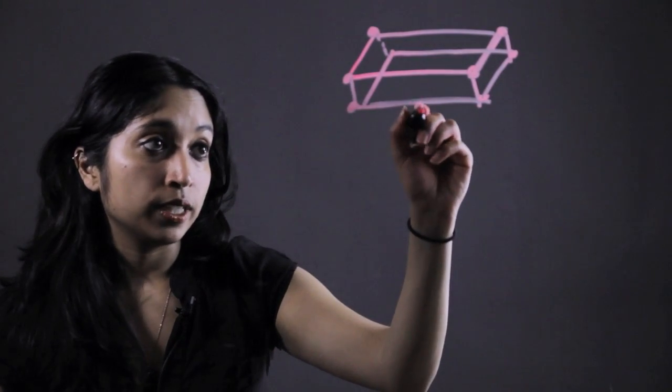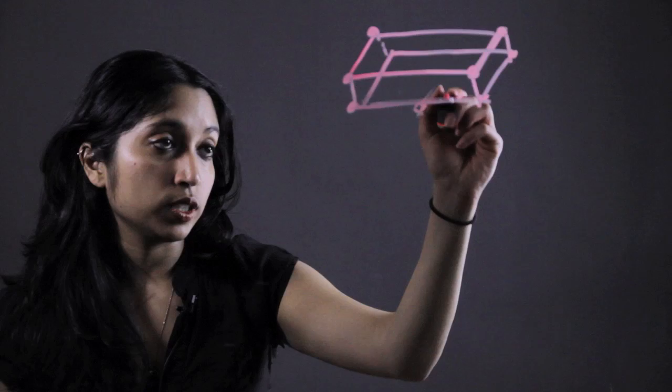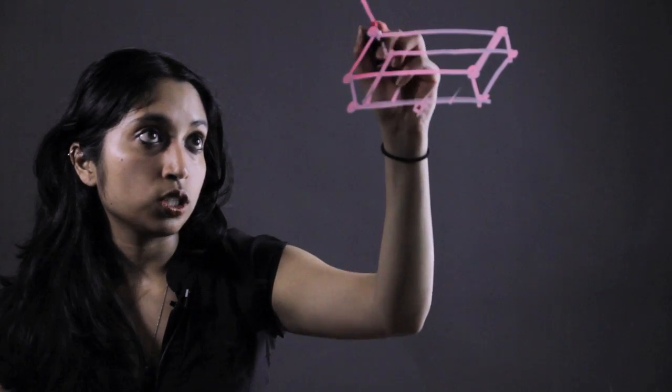So a vertex would not be one of the lines and it would not be one of these surfaces. It's just a corner point.